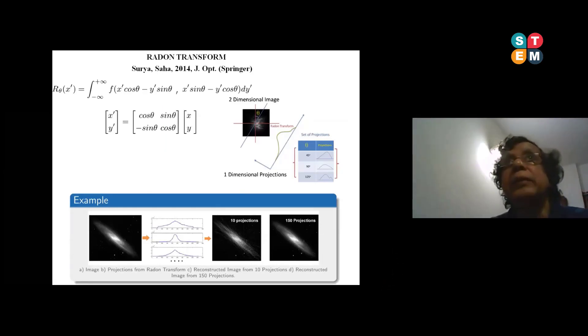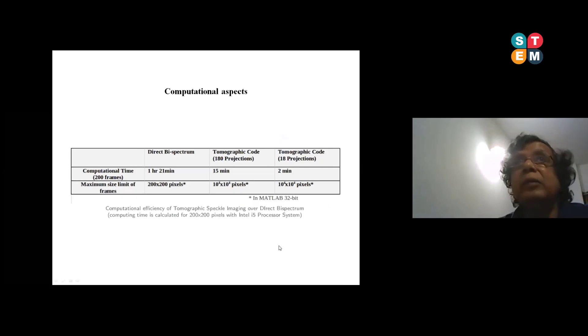What we did: one of my students I asked him to develop the program in a much easier way - that is called Radon transformation based. He did the calculation. It's nothing but a projection-based calculation. The same image he has taken in the image space itself - we don't need to do Fourier transform. One dimensional projection depending on how many projections you gave - say 45 degree, 90 degree, and 125 degree. For example, this is a simulated galaxy. He has done 10 projections, showing this much of clarity. He did 150 projections - he gets almost the same galaxy pattern.